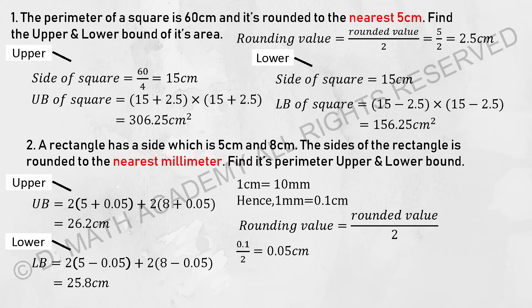And for you to find the lower bound of the square, simply take 15 cm minus 2.5, you will get 12.5. And for you to calculate the area, take 12.5 multiplied by 12.5.